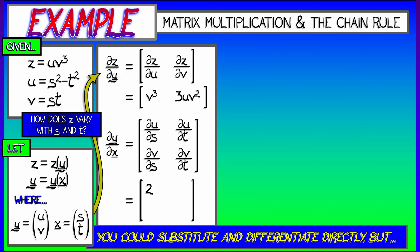That's going to give us the 2x2 matrix, 2s, negative 2t, and then t and s in the second row. Okay. There we go. Those are the pieces.